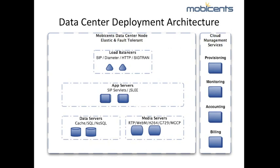A MobiSense cloud consists of an array of local data center nodes interconnected with each other. Each data center node is scalable and fault tolerant. Servers within the data center are automatically instantiated, disposed and recycled on demand. If any of the server instances fail, calls and other communication sessions automatically migrate to a healthy server instance. The end users almost never observe any downtime in their communication services.